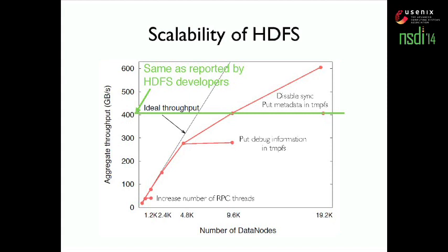We further investigate whether we can improve HDFS. Profiling shows the problem is still in the logging system of the name node. Since we have no way to increase disk speed, we consider using very fast future devices like persistent memory. By also putting the metadata log in tmpFS to emulate this case, the system achieves 600 gigabytes per second. At that point, the problem is in the synchronization of different threads on the name node, which would require significant redesign, so we stop there.